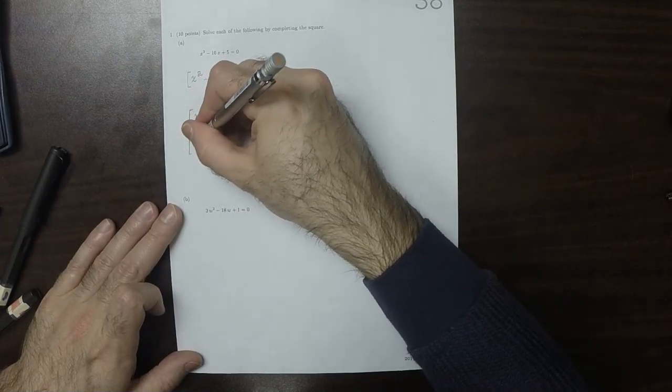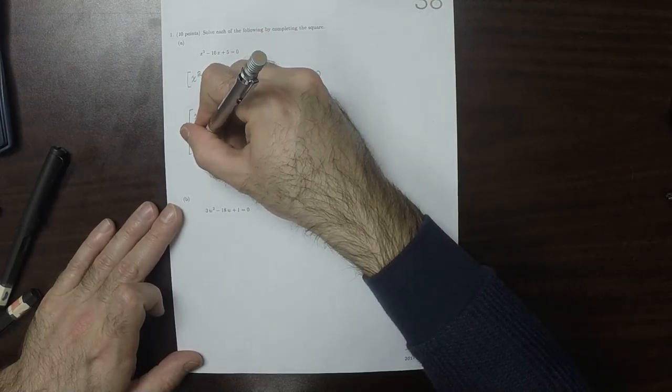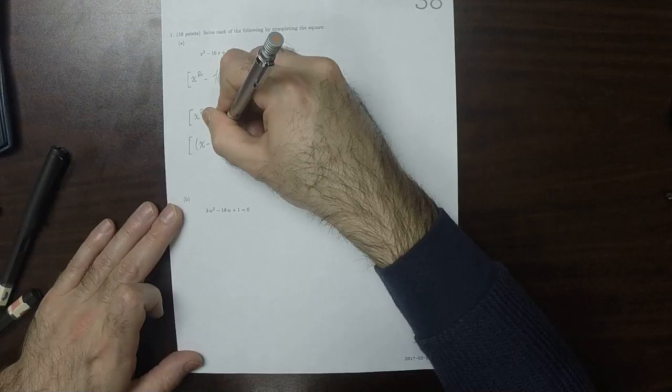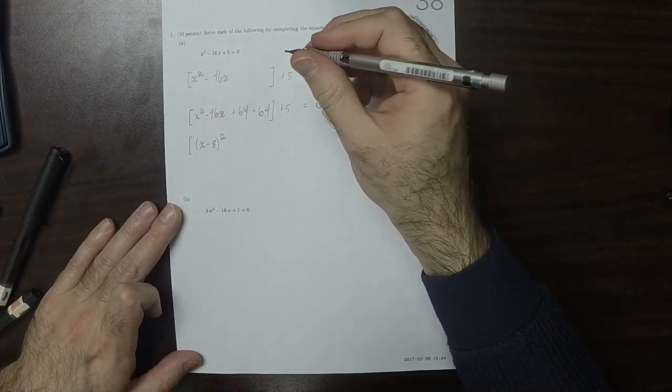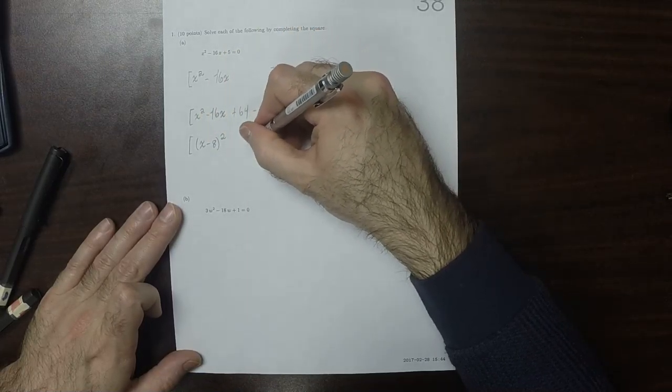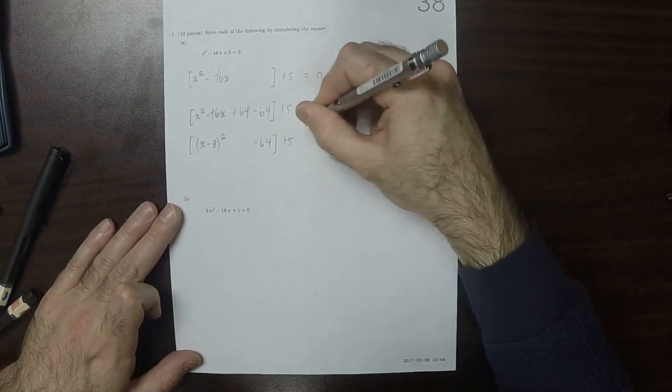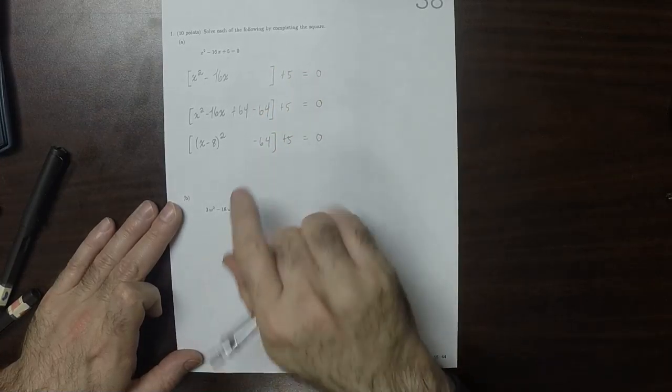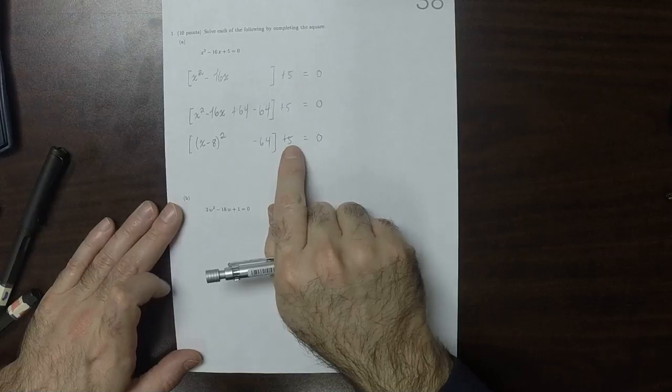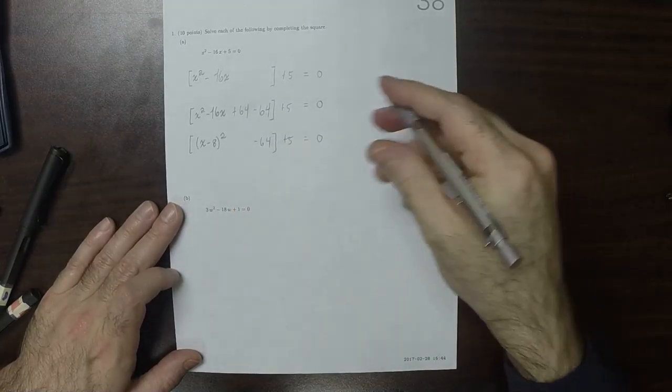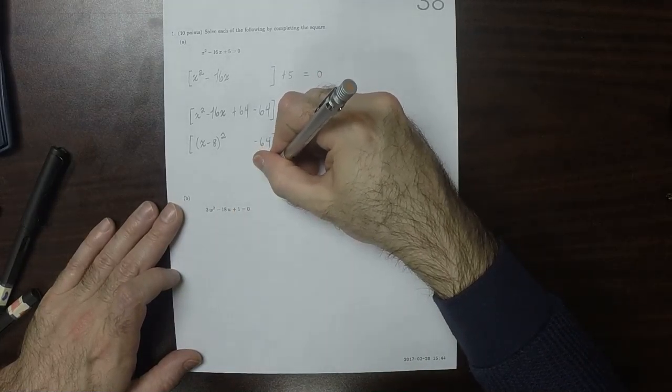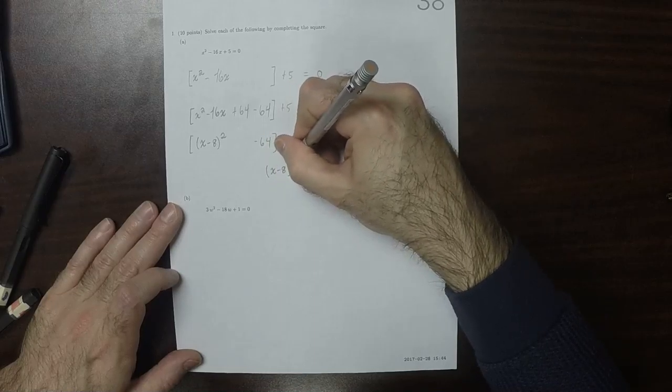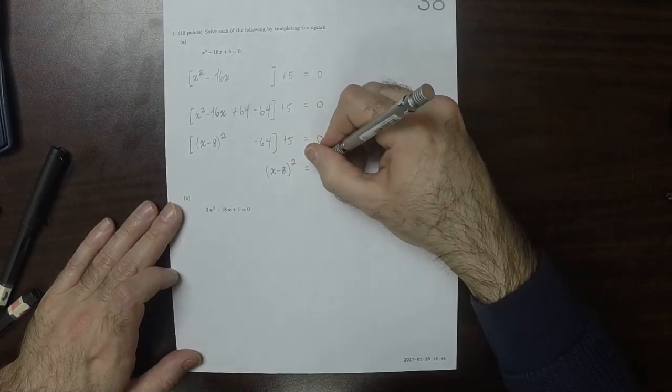So those first three terms now become the square x minus 8 squared. And then minus 64 plus 5 equals 0. Negative 64 plus 5 is negative 59. But move it to the other side, and you get x minus 8 squared is 59.